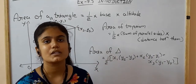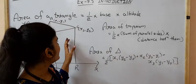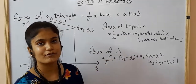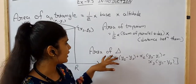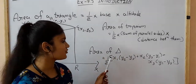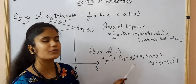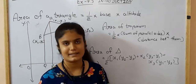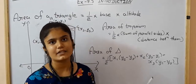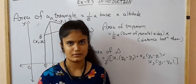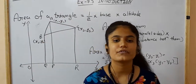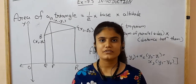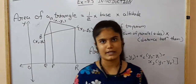But to make it easier and avoid the long method, a simpler formula is given in the textbook. Area of triangle equals 1/2 into X1(Y2 − Y3) + X2(Y3 − Y1) + X3(Y1 − Y2). This is how we will find the area of a triangle. Pause the video to note down this formula.